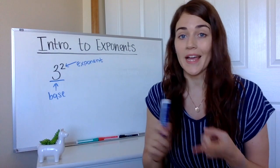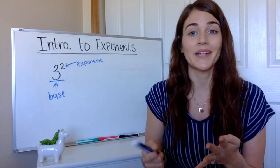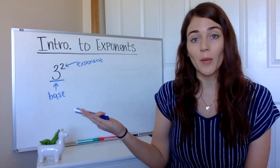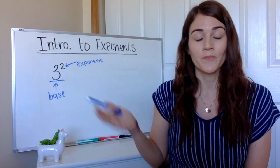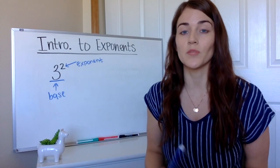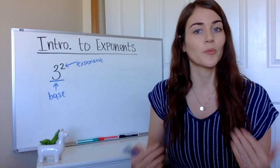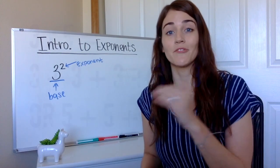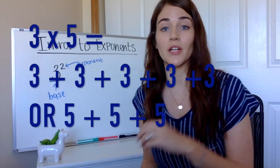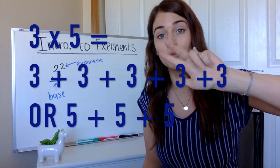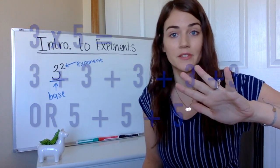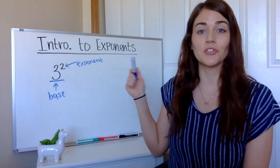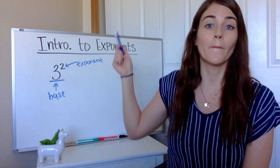So far you've learned adding, subtracting, multiplying, and dividing. An exponent is just another operation, just like those four. You might remember learning multiplication as just repeated addition — three times five is really just three plus three plus three plus three plus three, three fives. Exponents is actually just repeated multiplication.